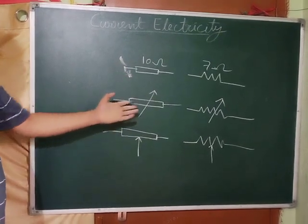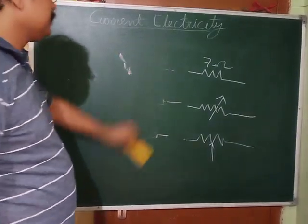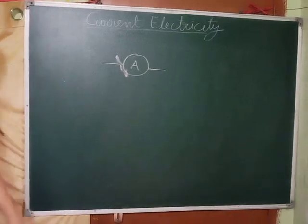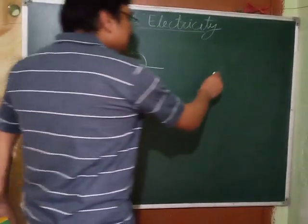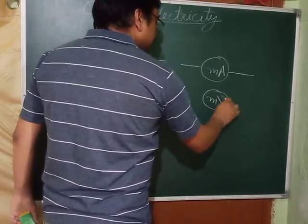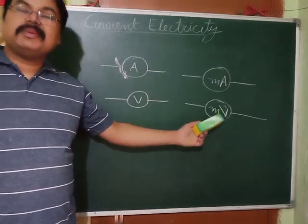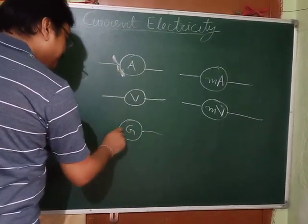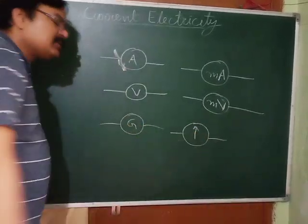Summary of symbols: fixed resistance has one symbol; variable resistance has two symbols; potential divider has two symbols. An ammeter is represented by a circle with A, a voltmeter with V. Milliammeter has mA, millivoltmeter has mV, microammeter has the mu symbol, and microvoltmeter also has mu. A galvanometer is represented by a circle with G, or another similar symbol — both are symbols of galvanometer.